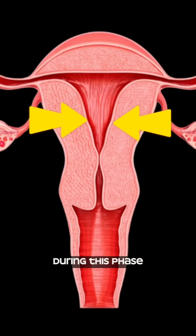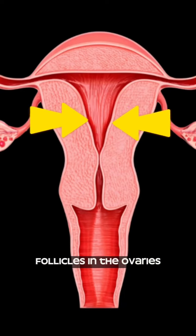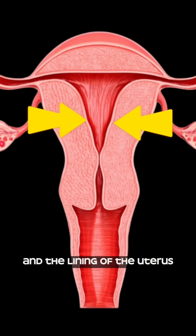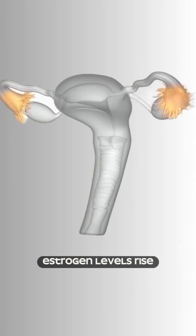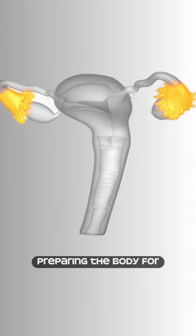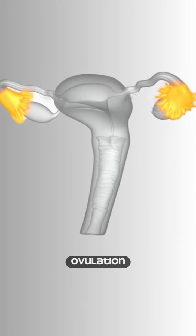Follicular phase — during this phase, follicles in the ovaries mature and the lining of the uterus thickens. Estrogen levels rise, preparing the body for ovulation.